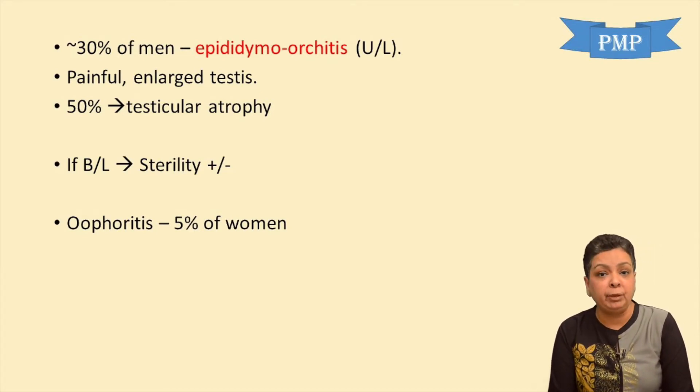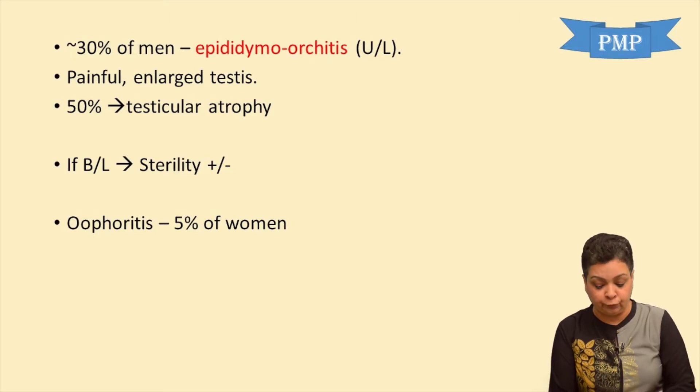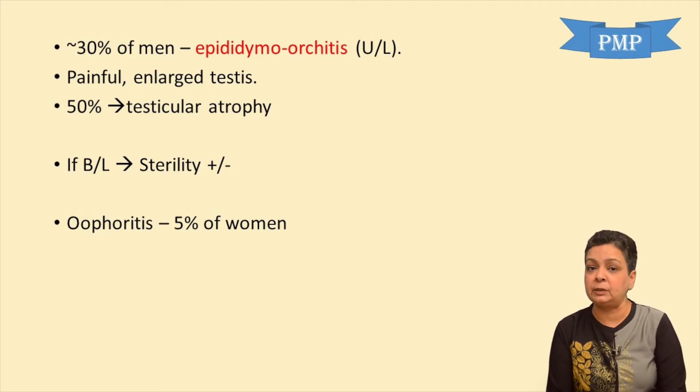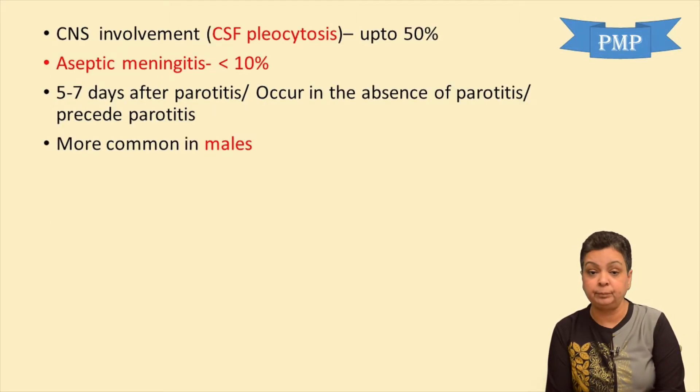5% of women develop oophoritis, which would present as pain abdomen.